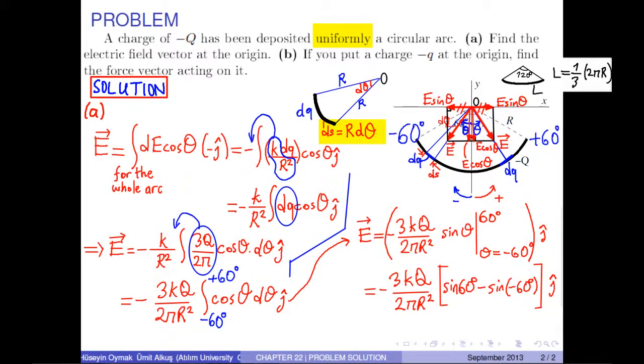We can write sin 60 degrees as root 3 over 2. Also, sin negative 60 degrees is negative root 3 over 2. Therefore, the electric field becomes negative 3 squared of 3 k times q over 2 pi r squared j hat.